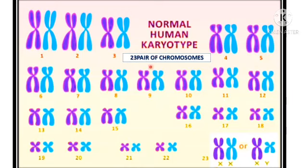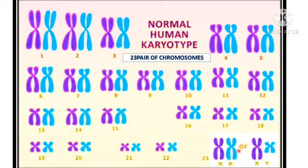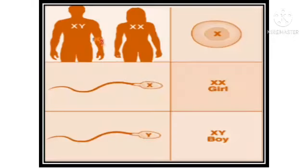As mentioned earlier, humans have 23 pairs of chromosomes: 22 pairs of autosomes, and the 23rd pair is called sex chromosomes. In males we have X and Y; in females we have XX. The remaining 22 chromosomes are autosomes.